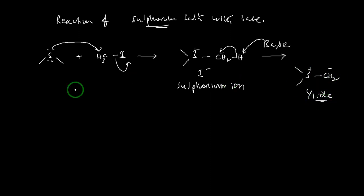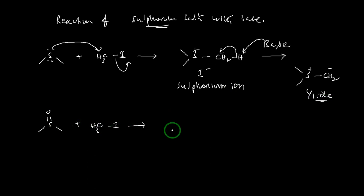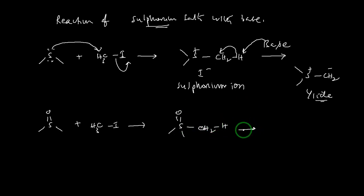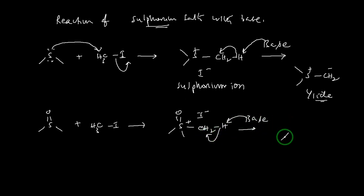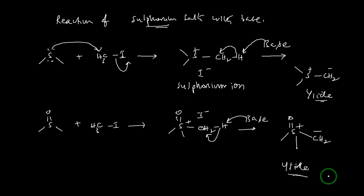You can also take dimethyl sulfoxide and treat it with methyl iodide — here you also get a salt. Treating that salt with a base abstracts the proton and produces the vicinal ionic intermediate called the sulfur ylide. This is one method to prepare sulfur ylides.